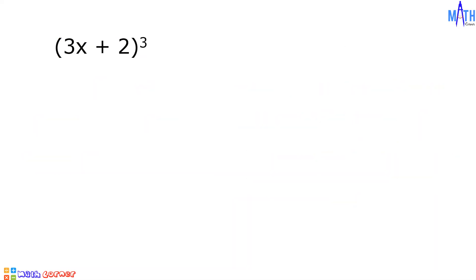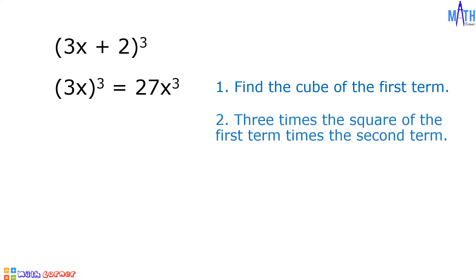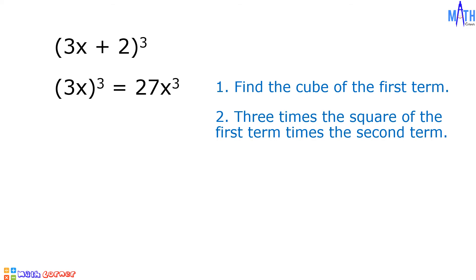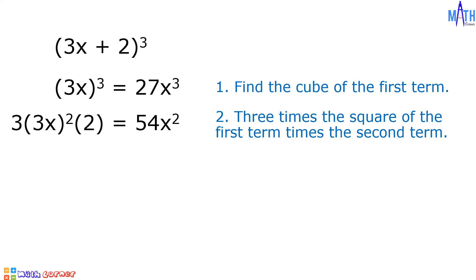Last example: what is the cube of 3x plus 2? Step number 1: cube the first term. The first term is 3x. Cube of 3x, or 3x times 3x times 3x, equals 27x cubed. Step number 2: 3 times the square of the first term times the second term. We have 3 times square of 3x times 2. The square of 3x equals 9x squared. 9x squared times 3 equals 27x squared. Times 2 equals 54x squared.